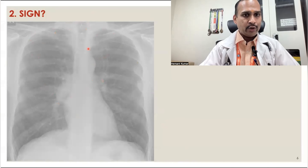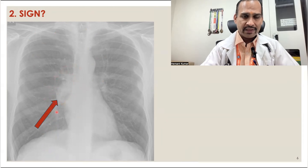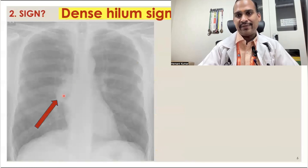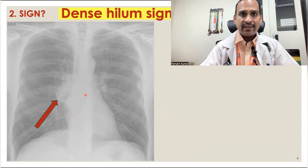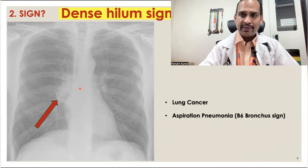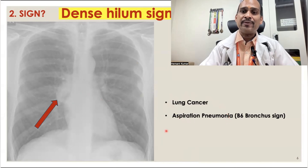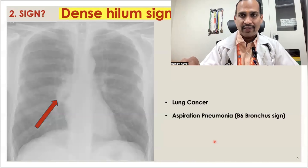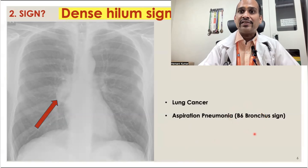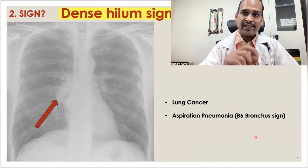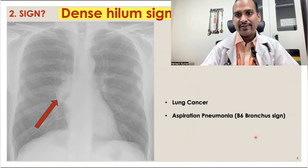Sign 2 is the dense hilum sign. In this X-ray, you can see there is homogeneous opacity in the unilateral hilar region. Any opacity in a unilateral hilum is called the dense hilum sign. If the unilateral hilum is prominent, it may be due to lung cancer or aspiration pneumonia in an ICU patient. In aspiration pneumonia, the segment involved is the apical segment of the right lower lobe — the B6 bronchus.